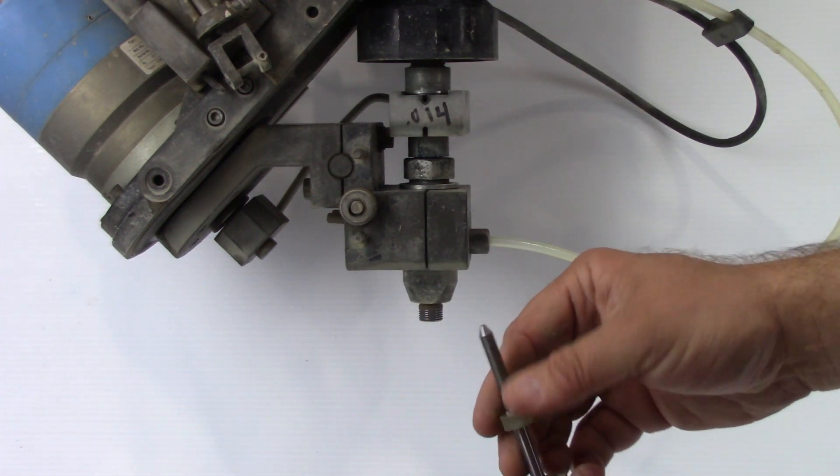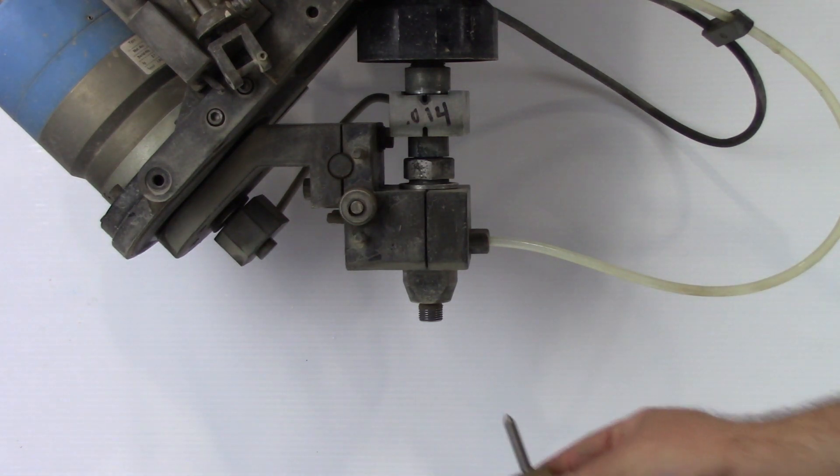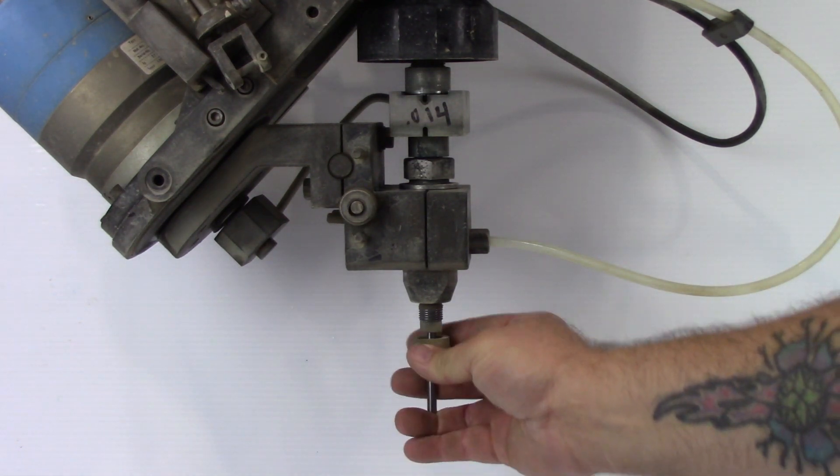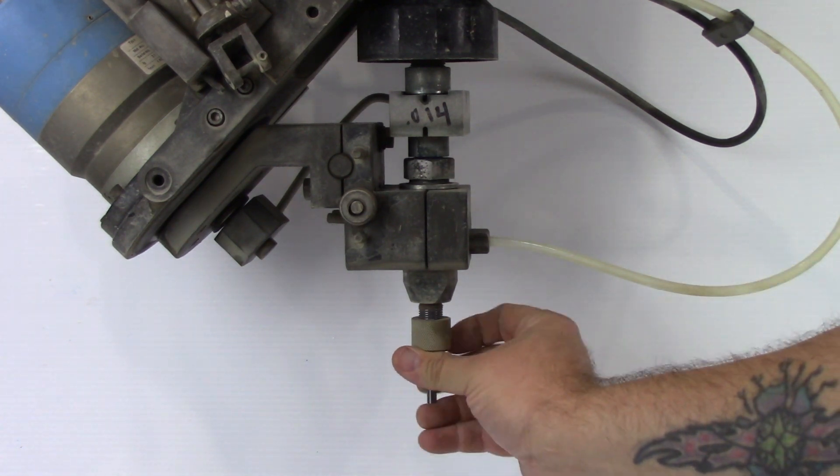Reverse the nozzle and reinsert it into the abrasive jet, making sure the end of the nozzle bottoms out on the mixing chamber. Tighten the compression cap by hand.